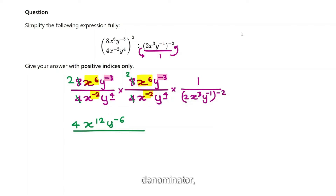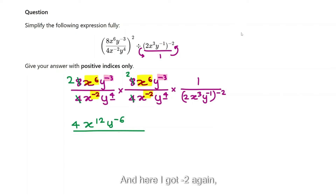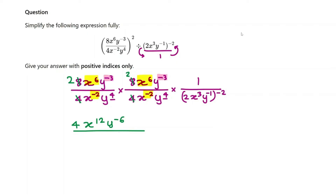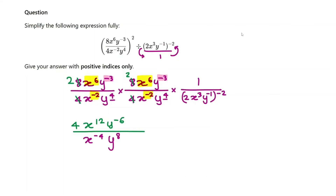Let's do the same thing to the denominator. x to the power of negative 2, and negative 2 again, gives x to the power of negative 4. Then y to the power of 4 add 4 is y to the power of 8. That's much simpler than the top part here.